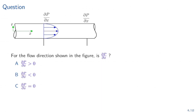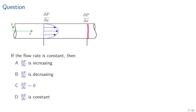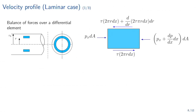Here are questions to prepare for the next class. We have a pipe with a pressure gradient driving the flow. First question: is dP/dx greater than zero, less than zero, or equal to zero? Second question: if the flow rate is constant, is dP/dx increasing, decreasing, zero, or constant? In the next section, we examine the velocity profile for the laminar case by taking a layer of fluid inside the pipe — a hollow cylinder — and analyzing the forces on that differential element.